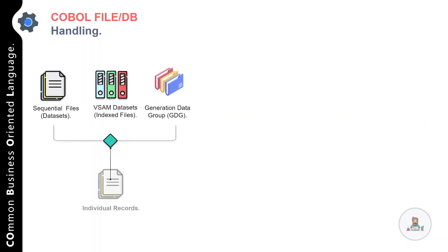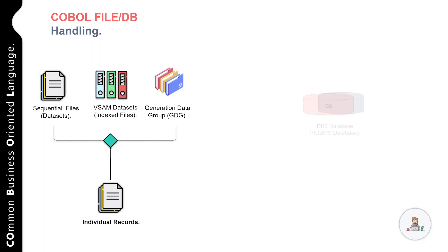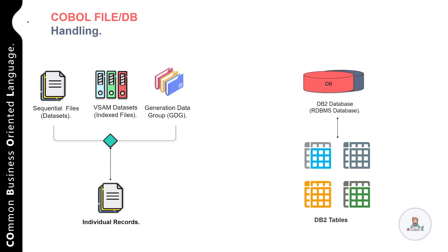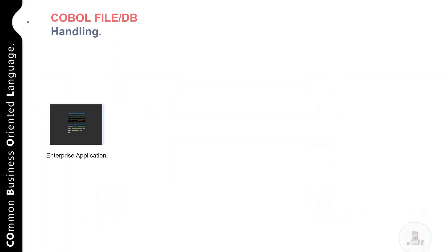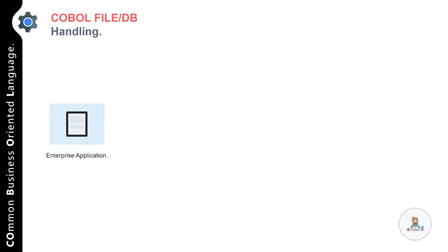A file is made up of individual records. A record is a collection of individual fields or data items, and the format of records in the file are defined in your COBOL program. On the other hand, a relational database management system or RDBMS is a common type of database that stores data in tables so it can be used in relation to other stored data sets.